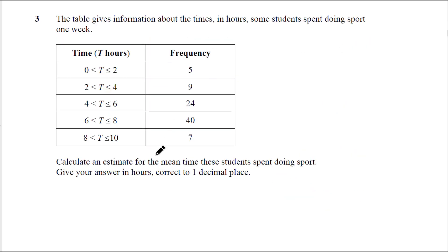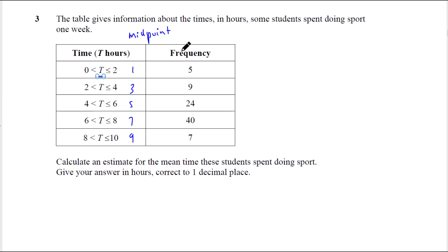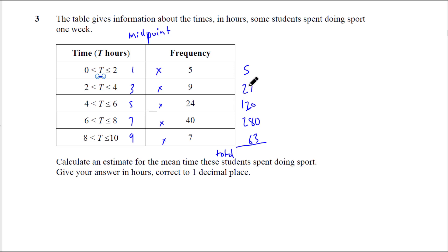So this is an estimate of the mean time these students spent doing sport. Give your answers in hours, correct to one decimal place. So it's an estimate because we take the midpoint from these time intervals. The midpoints are easy to see: 1, 3, 5, 7, and 9. If you have more difficult numbers, the midpoint is the two numbers added together then divided by 2. Then we multiply that by the frequency. 1 times 5 is 5. You have 27, 120, 280, 63. What's the total?